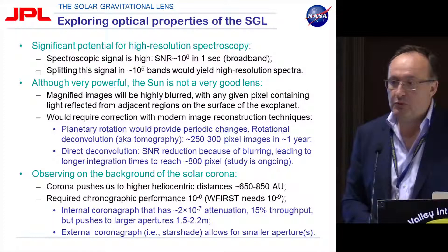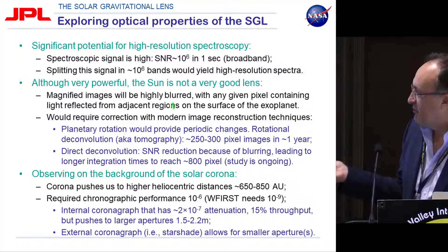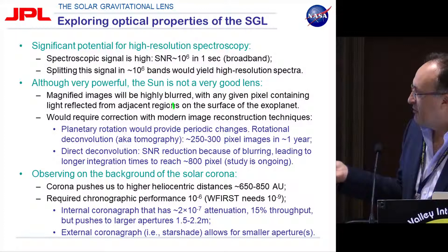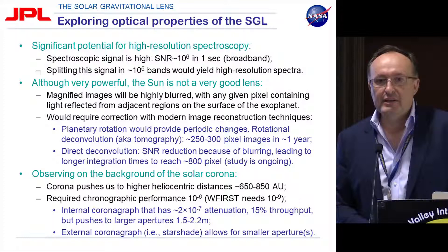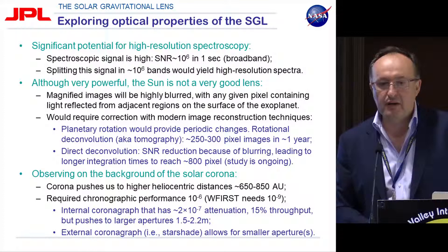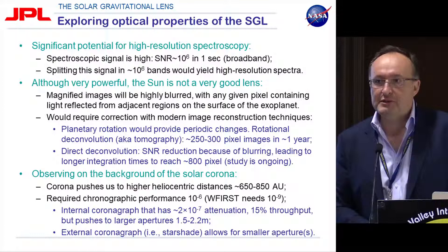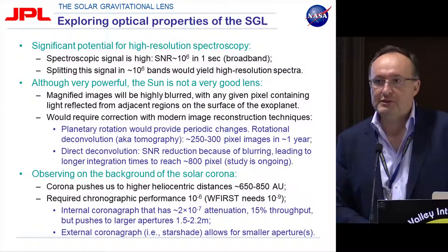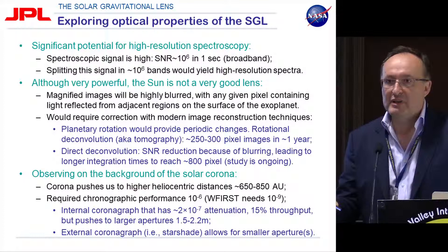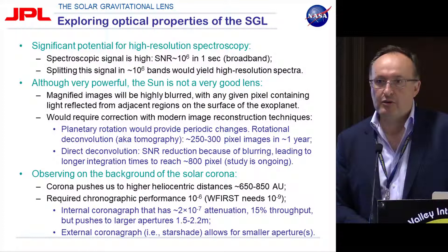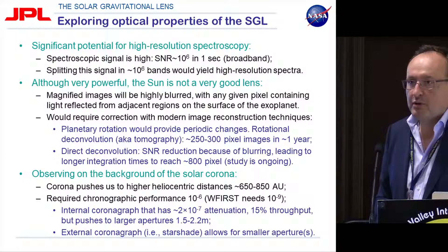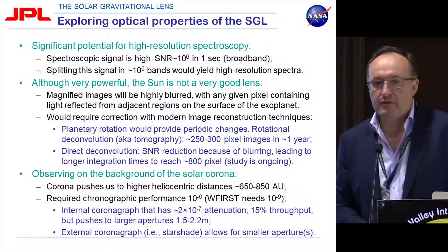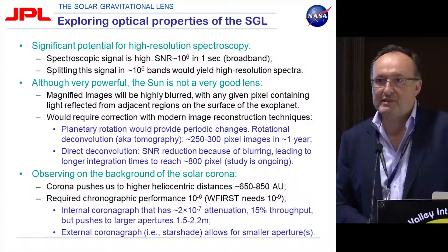To summarize: the spectroscopy signal is very good, rotational deconvolution is very promising, and direct deconvolution is strong but challenging. We now have a design for a coronagraph. Compared to coronagraphs developed for the WFIRST mission where an external coronagraph (star shade) achieves attenuation of 10 to the minus 9, we only need to block the Sun down to the level of the solar corona at the Einstein ring area — so 10 to the minus 6 or 10 to the minus 7 is sufficient. We can build a coronagraph with a ratio of 10 to the minus 6 and an optical throughput of roughly 15%, compared to WFIRST's 2%. Still, this pushes the telescope to larger aperture sizes.